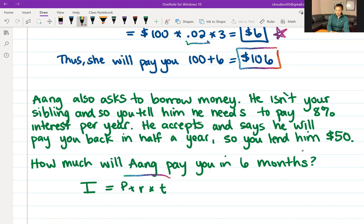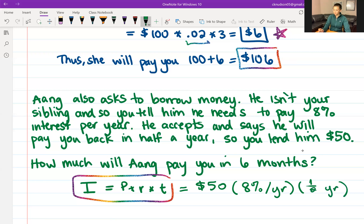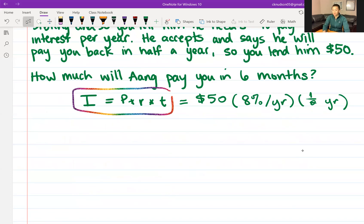And again, we have our amount of interest is equal to the principal times the rate times the time. In this case, the principal is $50. The rate is 8% per year, and then we've got a time period of half a year, six months. Again, let's move this down from 8%. Rewrite that as 0.08.